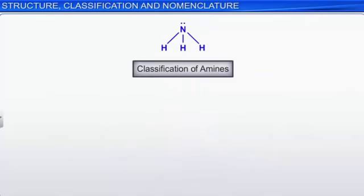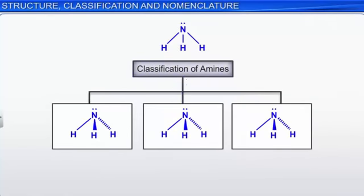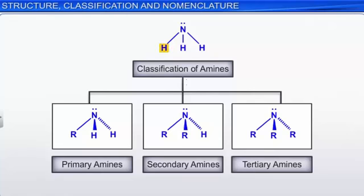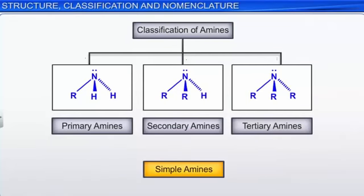Depending upon the number of hydrogen atoms replaced by alkyl or aryl groups in the ammonia molecule, amines are classified into three types: primary, secondary, and tertiary. The replacement of one, two, and three hydrogen atoms of ammonia with one, two, and three alkyl or aryl groups yields primary, secondary, and tertiary amines respectively. Amines are called simple amines when all the alkyl or aryl groups are the same, and mixed amines when they are different.